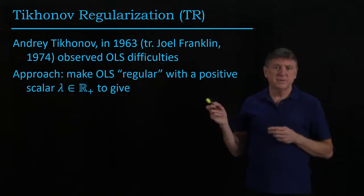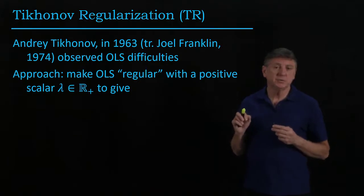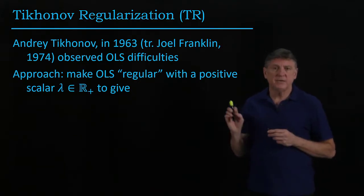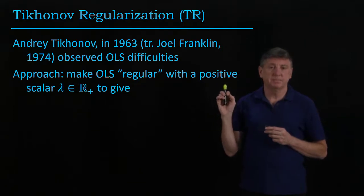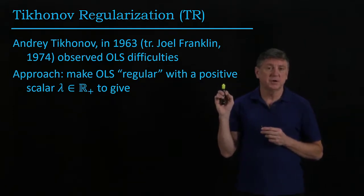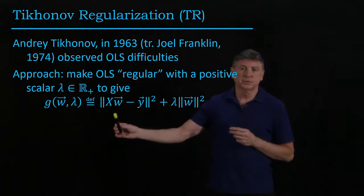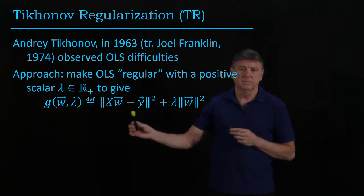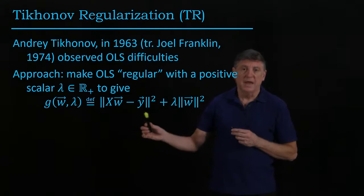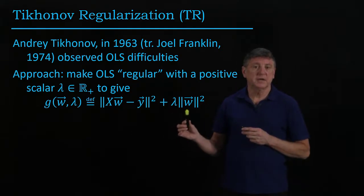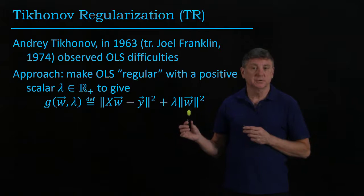His approach was to make ordinary least squares, and he used the term regular, and he wanted a positive scalar, so that's not just a non-negative, a positive number where you took the regression norm, squared norm, and then you add a multiplier times the norm of the solution.